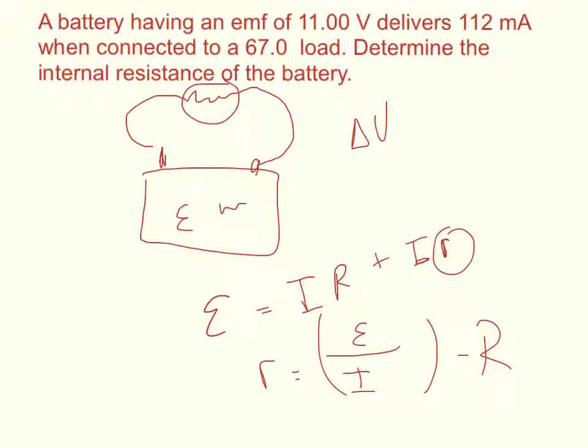I got that algebraically by factoring out the current and having the outer resistance plus the internal resistance. Divided that by I, so I got E over I, and then I subtracted the R to the other side.